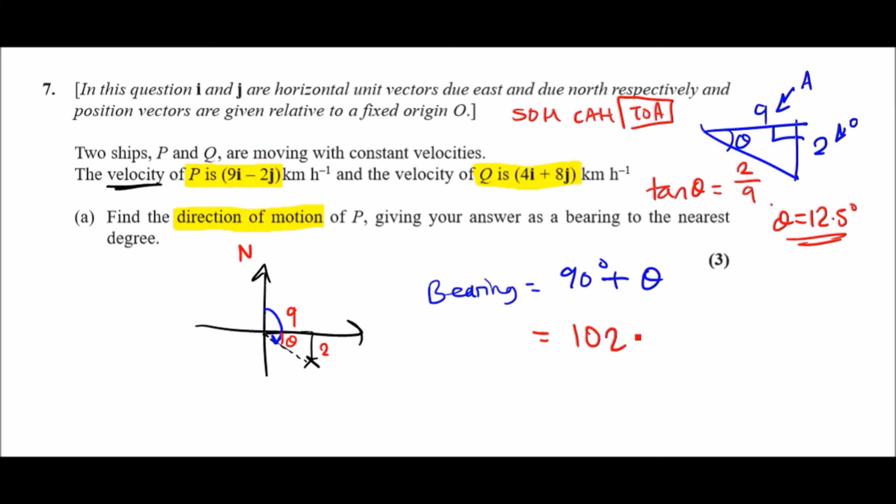A common question is why do we not use a position vector? That's simply because a position vector is just a coordinate, and a coordinate has no angle or direction—it's just a single point. Whereas a velocity like this is a direction, telling us it's moving 9 blocks to the right and 2 down every single hour, so it's always moving in this direction. To the nearest degree, this would be 103 degrees.